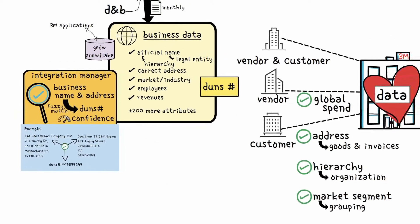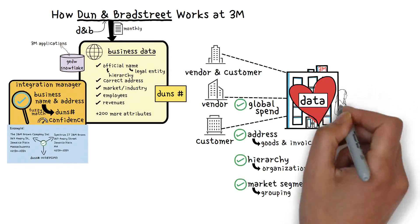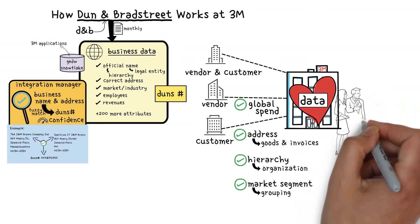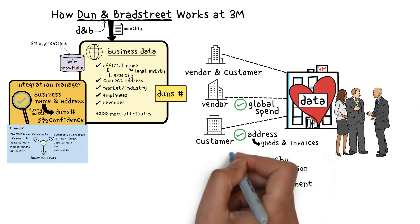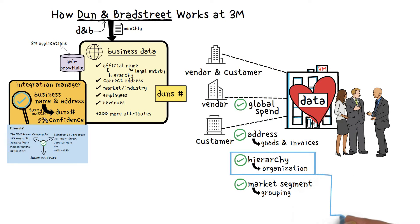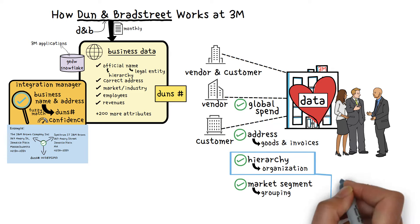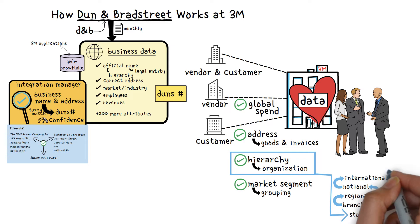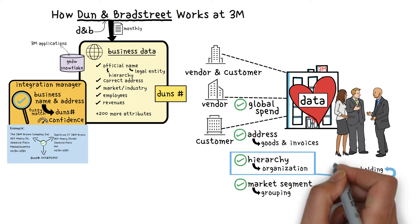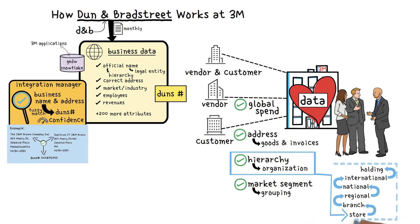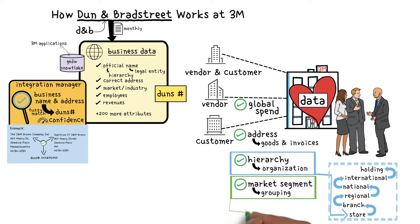Having easy access to the DNB data is a game changer at 3M because it allows our smart business people to do some pretty amazing things, such as creating customer hierarchies — linking a store or warehouse to the branch office, to the regional office, to the national office, to the international headquarters, the holding company, etc. Or grouping customers into a market segment, for instance, seeing all the sales into woodworking shops.